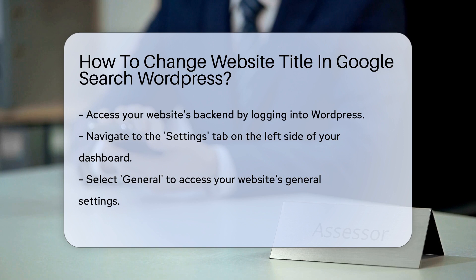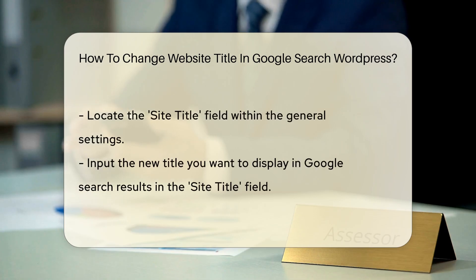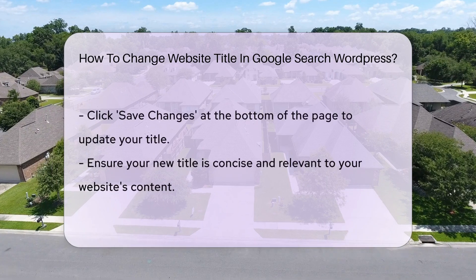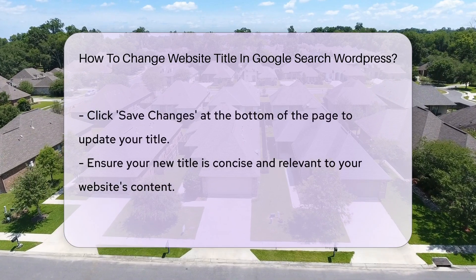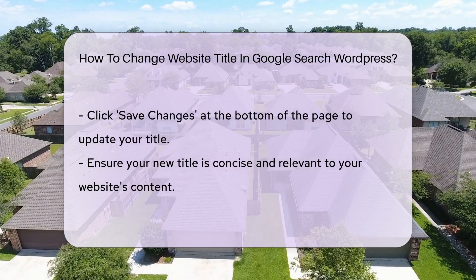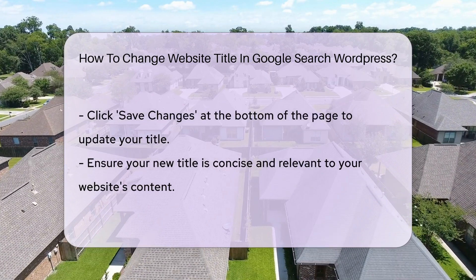Once you're logged in, navigate to the Settings tab on the left side of your dashboard. From there, select General to access your website's general settings. Look for the Site Title field, where you can input the new title you want to display in Google search results. Remember to click Save Changes at the bottom of the page to ensure your new title is updated and visible on Google.